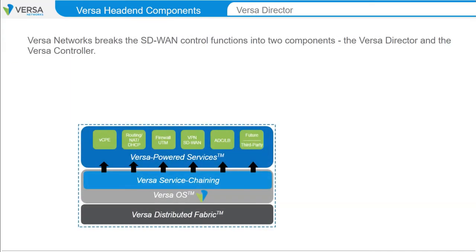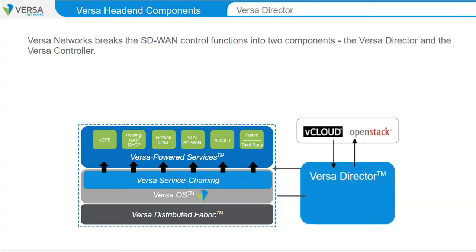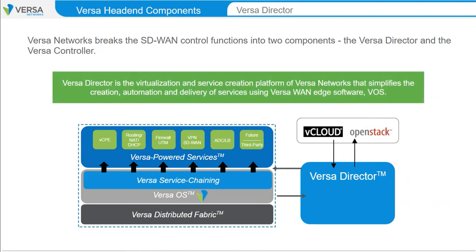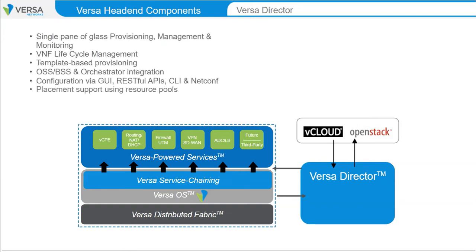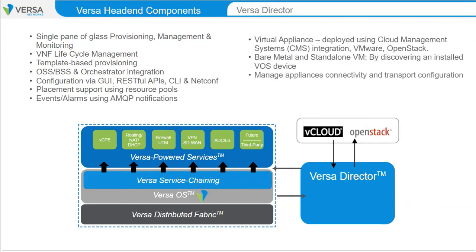Versa breaks the SD-WAN control functions into two components, the Versa Director and the Versa Controller. Versa Director is the virtualization and service creation platform of Versa Networks that simplifies the creation, automation, and delivery of services using Versa WAN Edge Software, or VOS. Versa Director provides the essential management, monitoring, and orchestration capabilities required to deliver Versa's secure cloud IP architecture, network, and security software services.